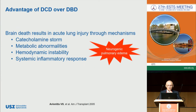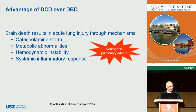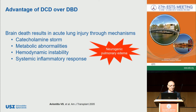Before coming to the outcome data, I would like to mention one advantage of DCD over DBD lung transplantation. As we all know, brain death itself leads to hemodynamic, metabolic, and neuroendocrine abnormalities resulting in neurogenic pulmonary edema, and I think this is the main reason why we reject these lungs.